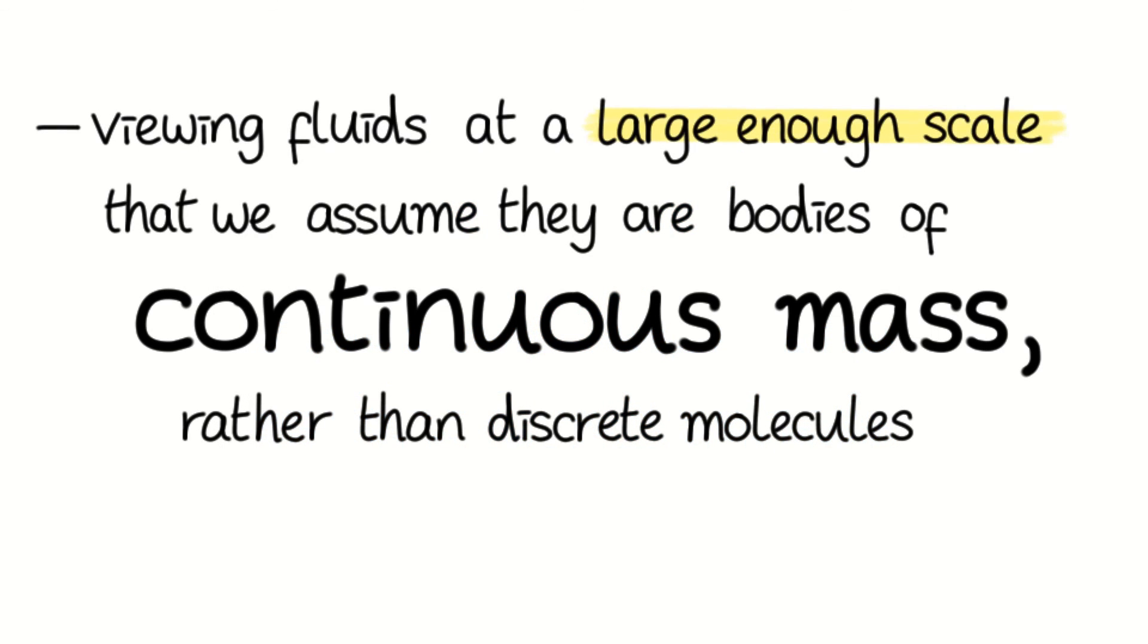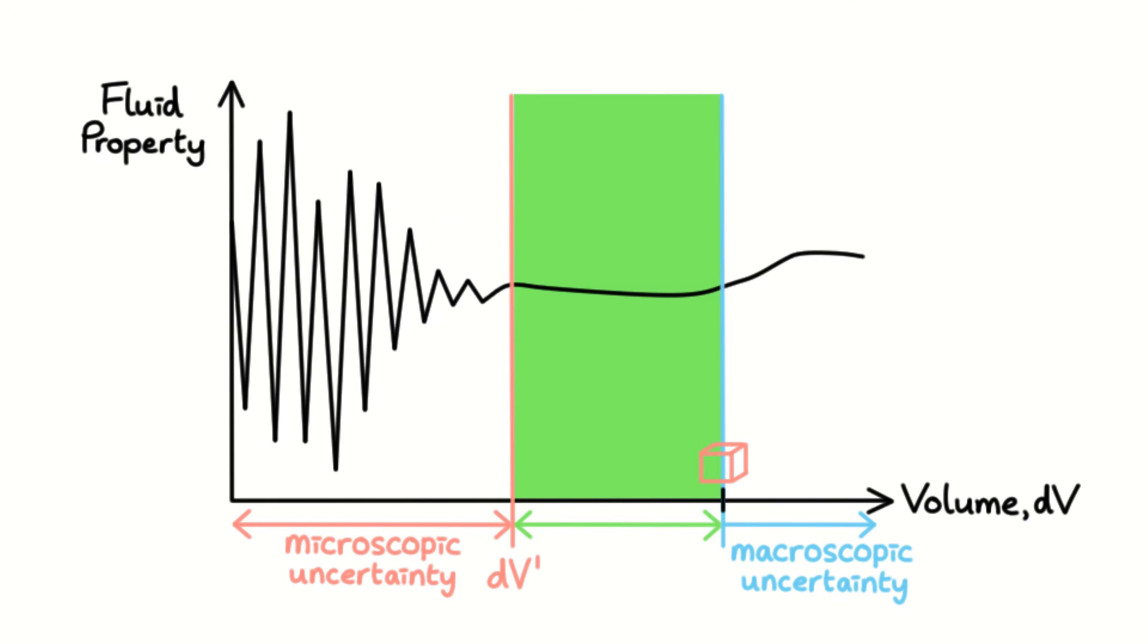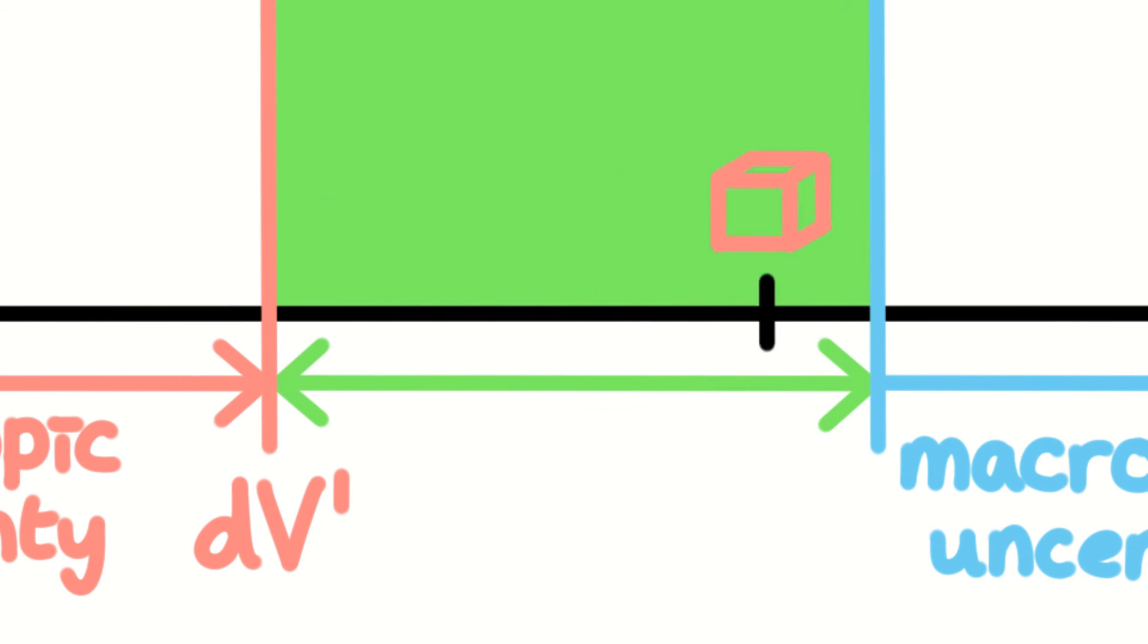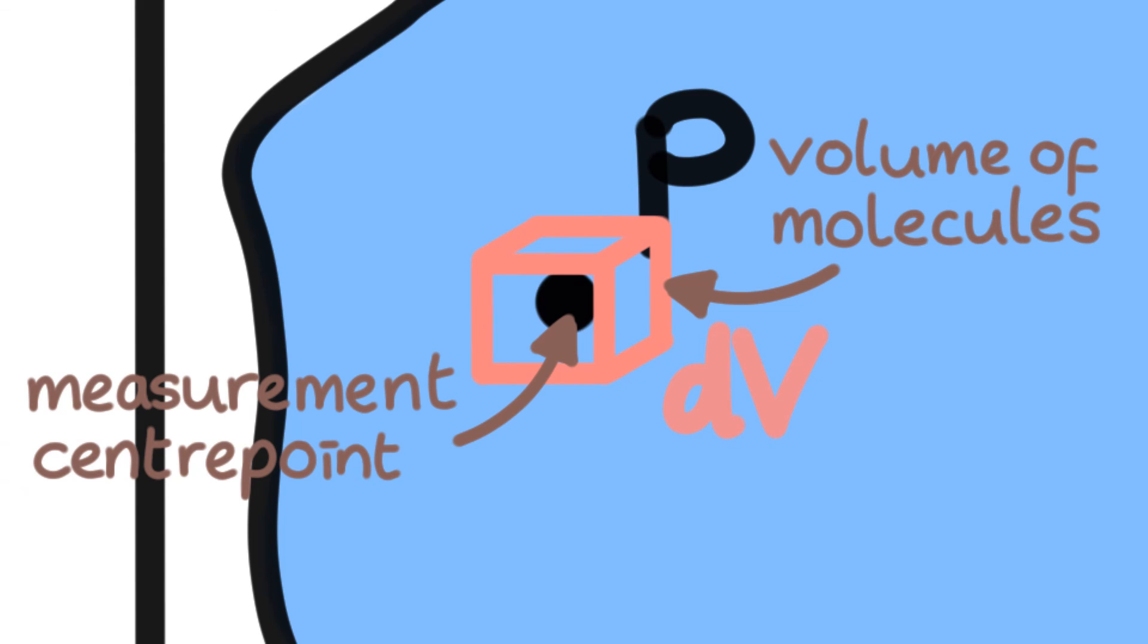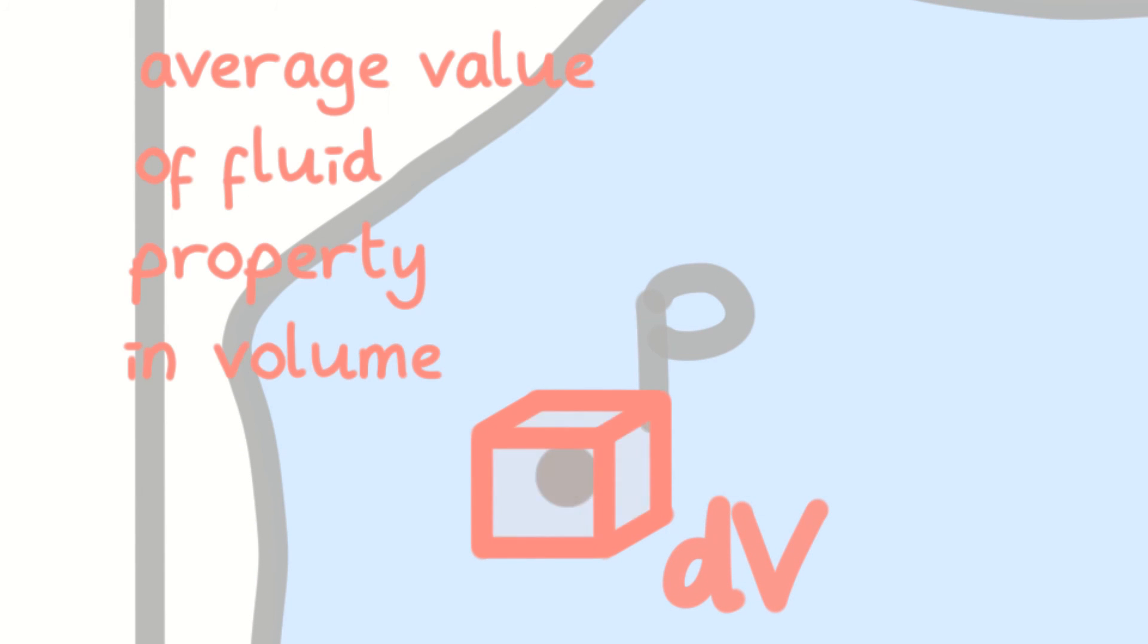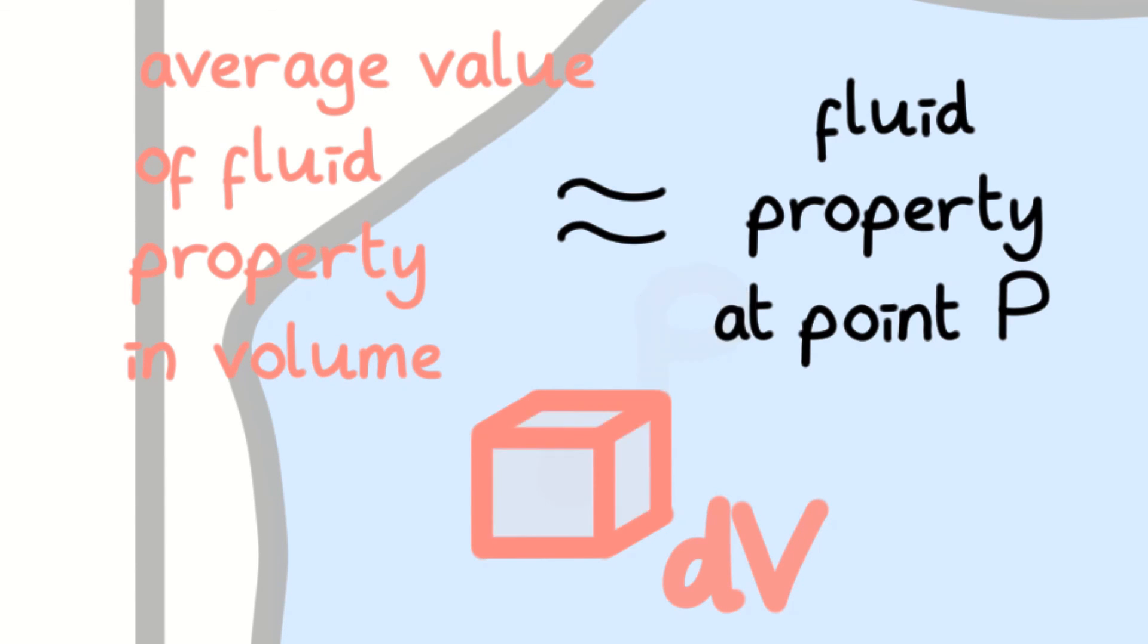This large enough scale essentially means using volumes within the green zone of dV to calculate fluid properties, but it is best to use a volume of dV prime. Volumes allow us to calculate an average value for fluid properties within the volume, which can represent the fluid property at a point in the fluid if the volume is centred on that point.